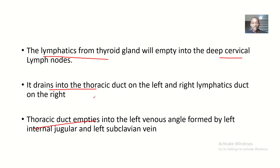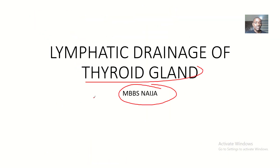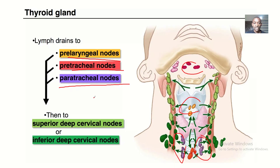From the deep cervical lymph nodes, lymph goes to the thoracic duct on the left and the right lymphatic duct on the right. The thoracic duct then empties into the left venous angle, formed by the left internal jugular vein and the left subclavian vein. That is the complete lymphatic drainage pathway of the thyroid gland.